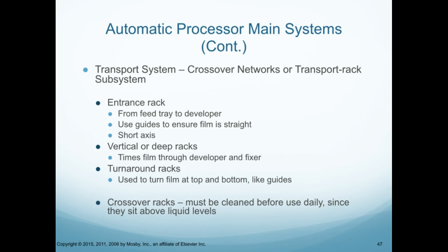The transport system has crossover networks and transport rack subsystem. The entrance rack goes from the feed tray to the developer and uses guides to ensure the film is straight and has a short axis. There are deep racks, also known as vertical racks, within the processor that help the film go through the developer and the fixer. There's also a turnaround rack used to turn film at the top and the bottom, like the guides.